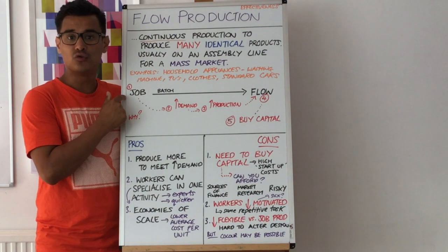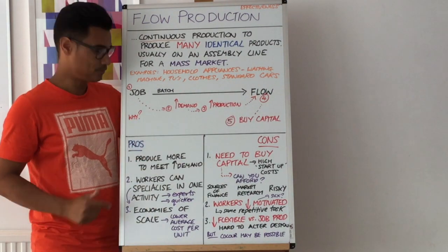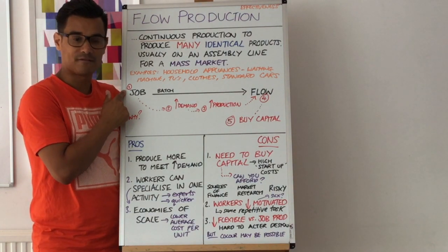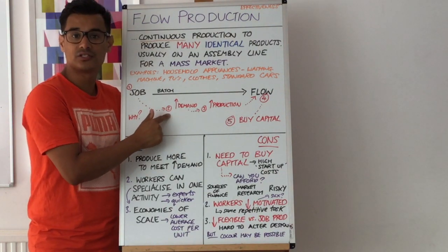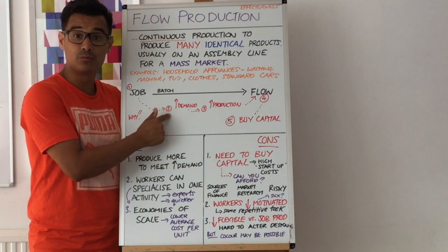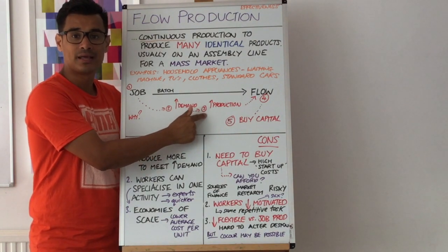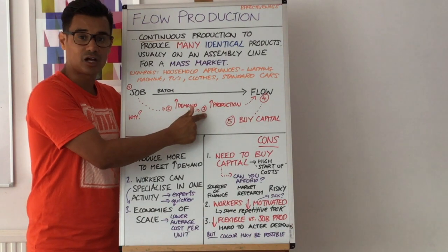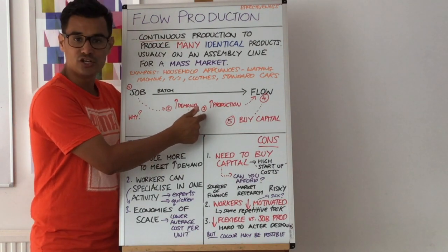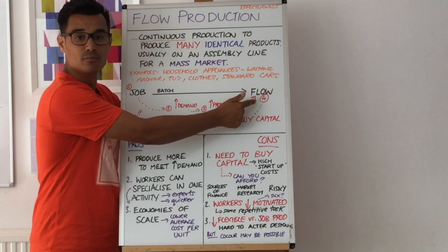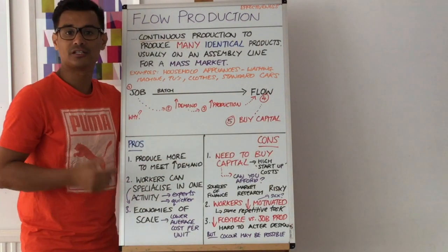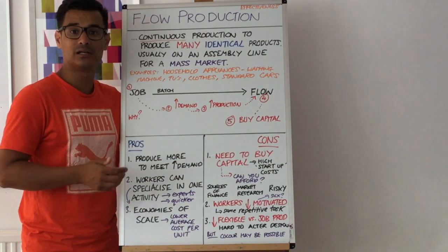Why would you move from job production to flow production? Well, you're a business doing well and growing. You started with job production, but as your business became more popular, you had increased demand, meaning you needed to produce more. It was difficult to increase production given the constraints of job production — it's slower and involves more labour. So you decide to move to flow production, which means buying machinery and capital.